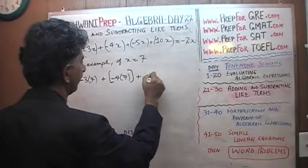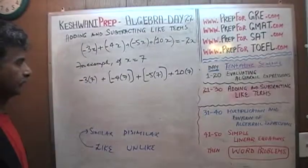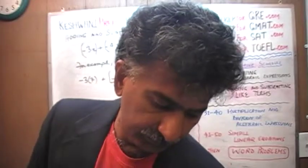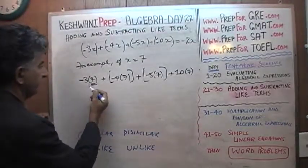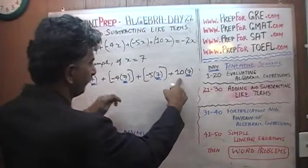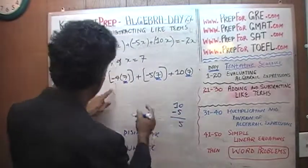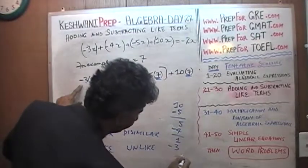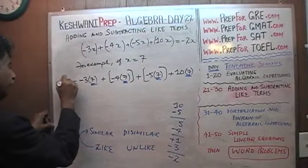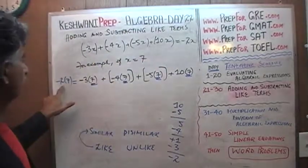Plus negative 5 times 7, plus 10 times 7. The question is: how many 7s do we have? We have negative 3 sevens, negative 4 sevens, negative 5 sevens, and 10 sevens. Starting from one end: 10 minus 5 is 5, minus 4 is 1, minus 3 gives us negative 2. So the sum is negative 2 times 7, which is negative 14. If x is 7, the value of the expression is negative 14.